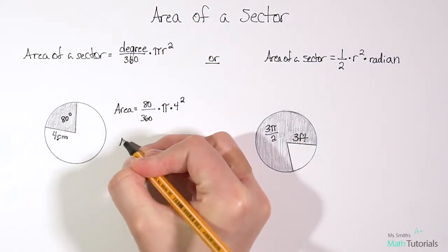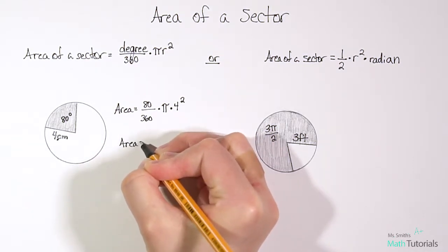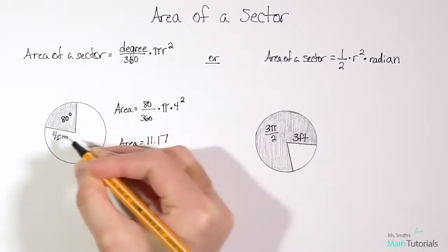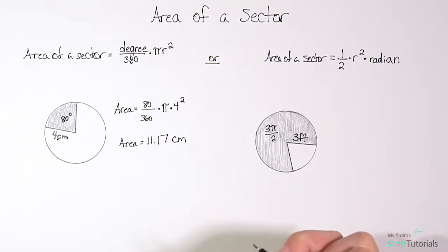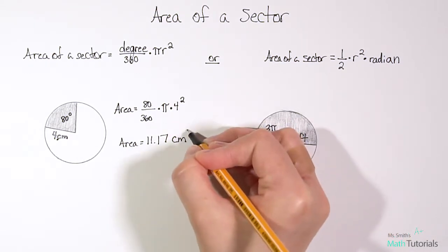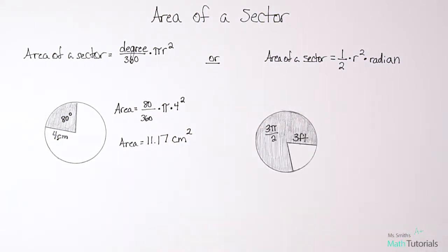Our area of the sector is 11.17 and then what's really important is that it's actually centimeters squared. And the reason it's centimeters squared is because we're finding the area of a 2D figure. This is like a 2D flat shape. It's not a sphere, it's just a circle. So that's why it's centimeters squared. It's a 2D shape we're finding the area of.